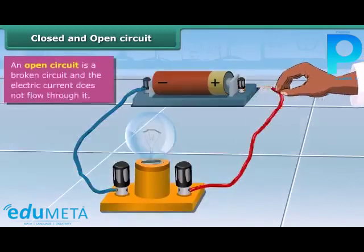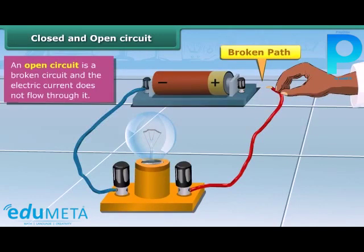Disconnect one of the wires. You will find that the path is broken now. Also, the bulb doesn't light up since electricity can't flow through this circuit. A broken path is known as an open circuit.